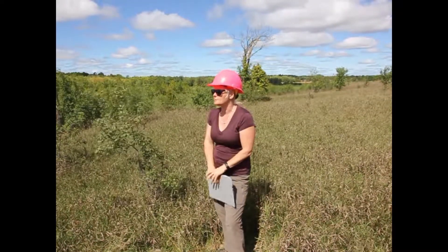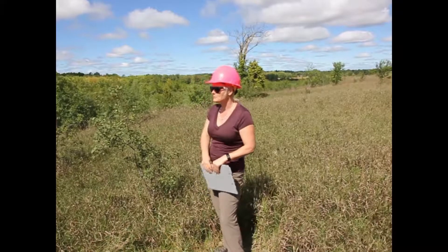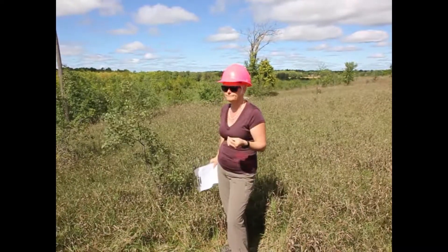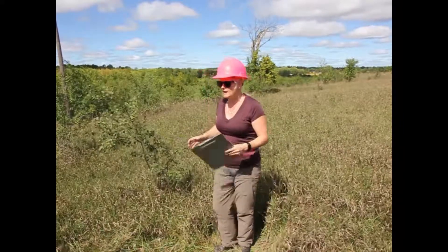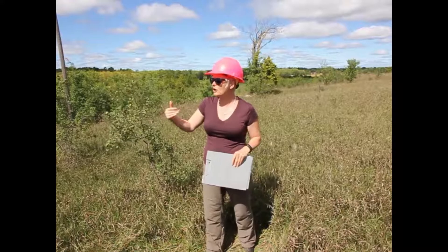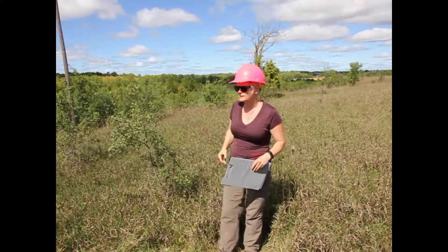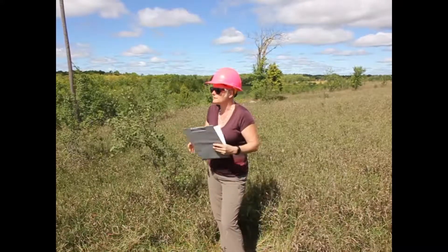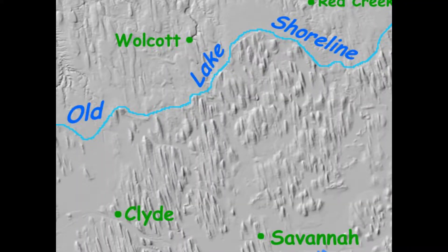Does anybody remember from your lectures last week how drumlins formed? They are formed by glaciers — by some fairly specific actions. Are they formed during glacial advance or glacial retreat? They're formed during advance. Drumlins are quite interesting — they're formed when glaciers advance over the top of till that has been previously deposited. The base of a glacier is not flat; it has ridges and undulations, and as it moves over the pre-existing till, it squishes it up into those cavities at the base, creating fluted terrain — a series of elongated hills aligned with each other that show the direction of ice movement.